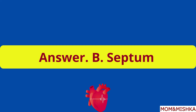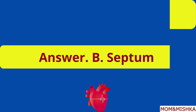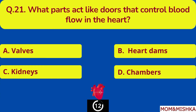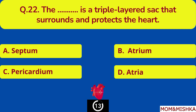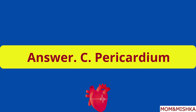Option B — septum. What parts act like doors that control blood flow in the heart? Option A — walls. The blank is a triple-layered sack that surrounds and protects the heart — pericardium.